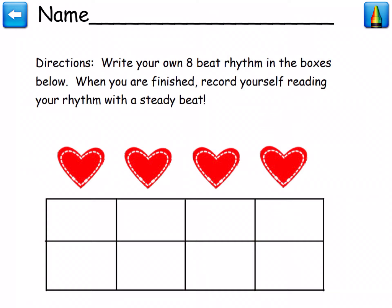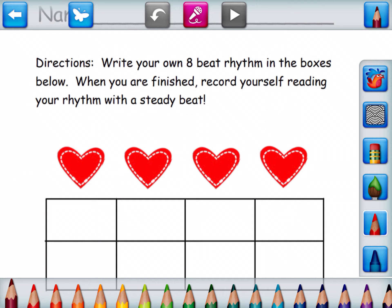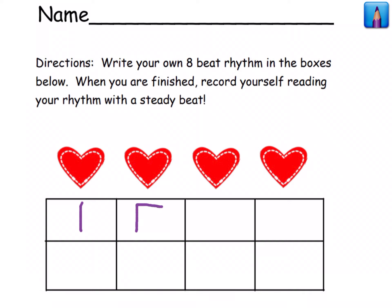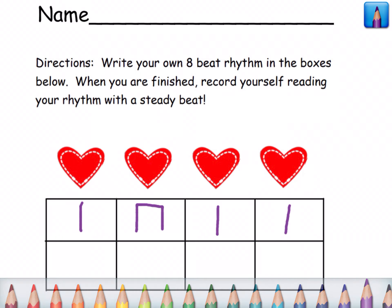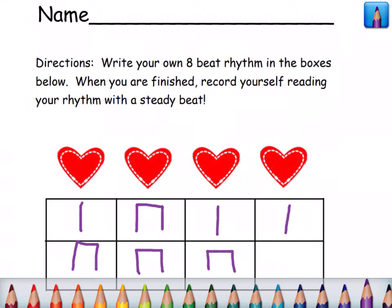It says: write your own eight beat rhythm in the boxes below. When you are finished, record yourself reading your rhythm with a steady beat. So you can come to the crayon — I'm gonna change to a pencil just because I want to, and I like purple. I'm just gonna write ta-ti-ti-ta-ta-ti-ti-ti-ti-ta. Make up your own rhythm — don't do the one that I did.